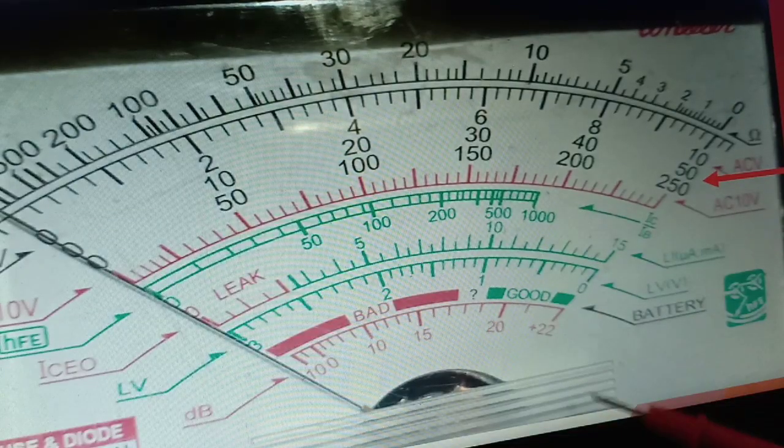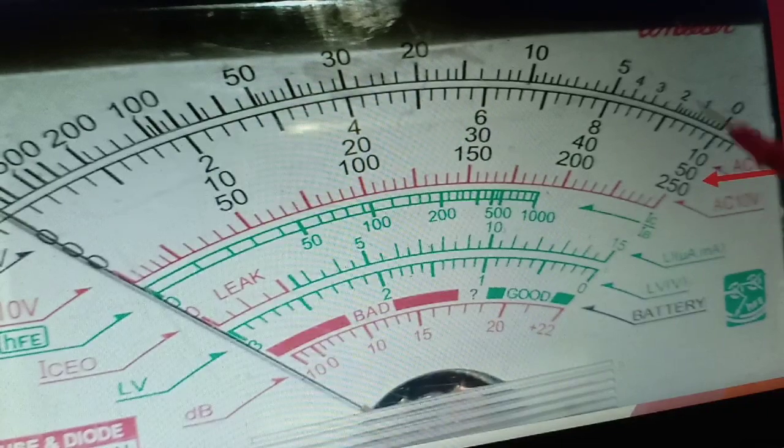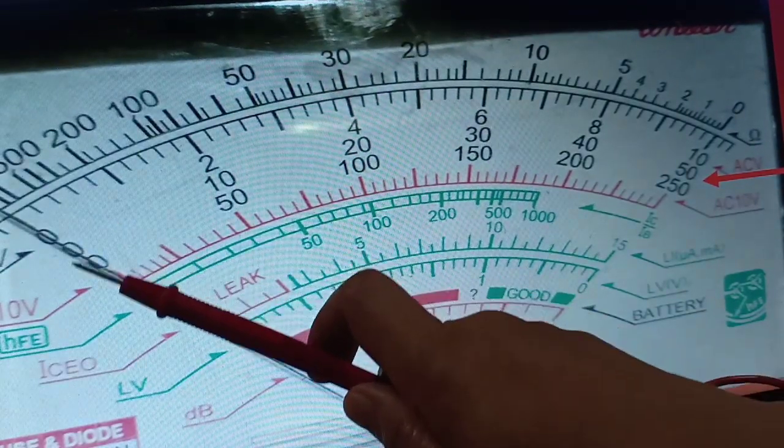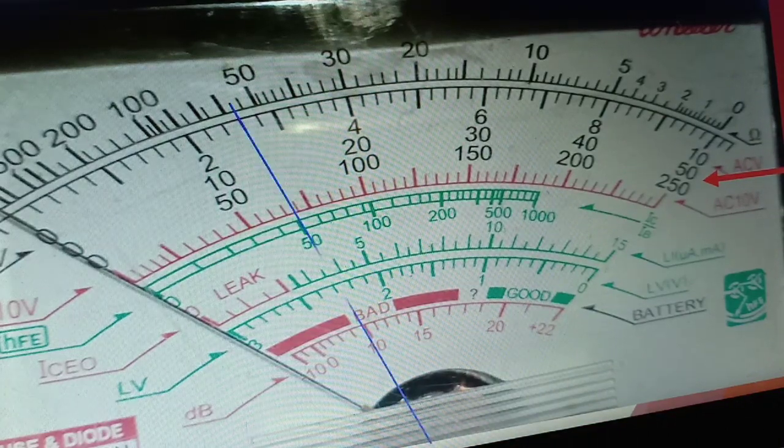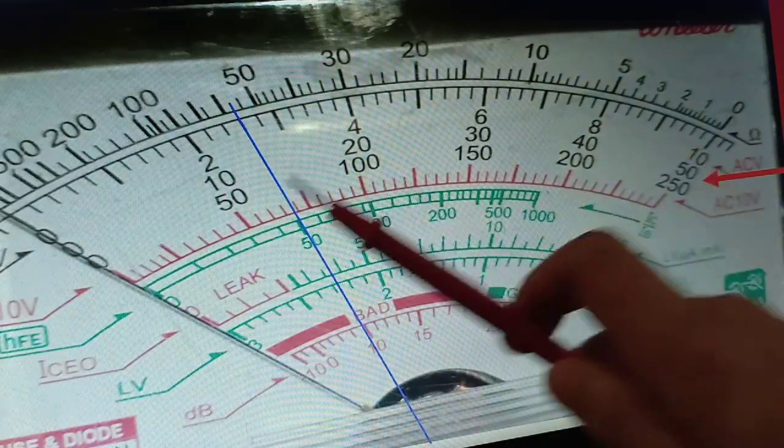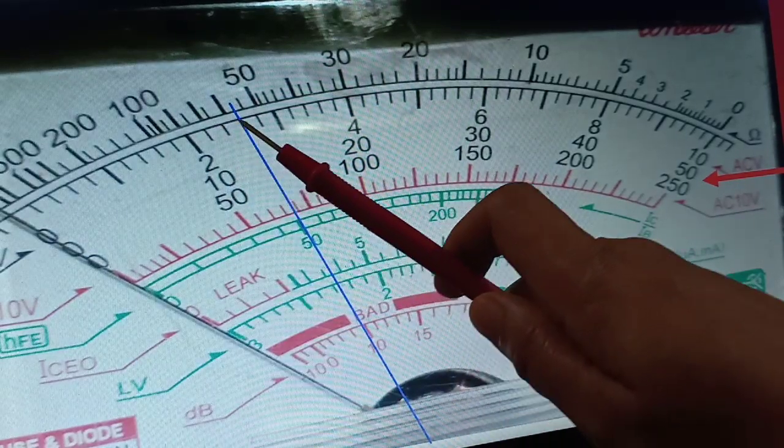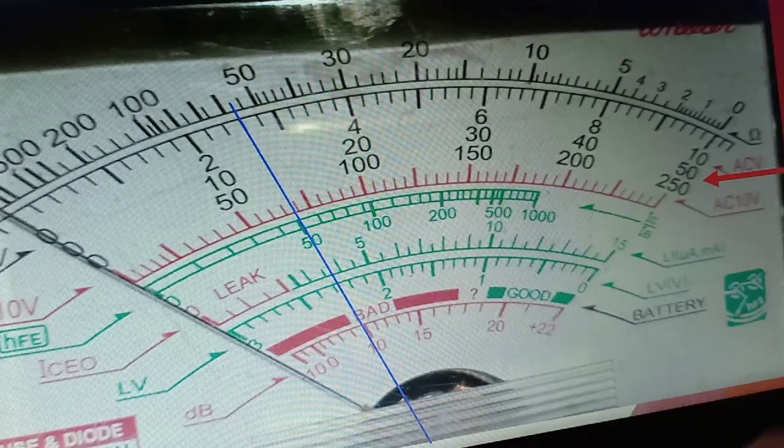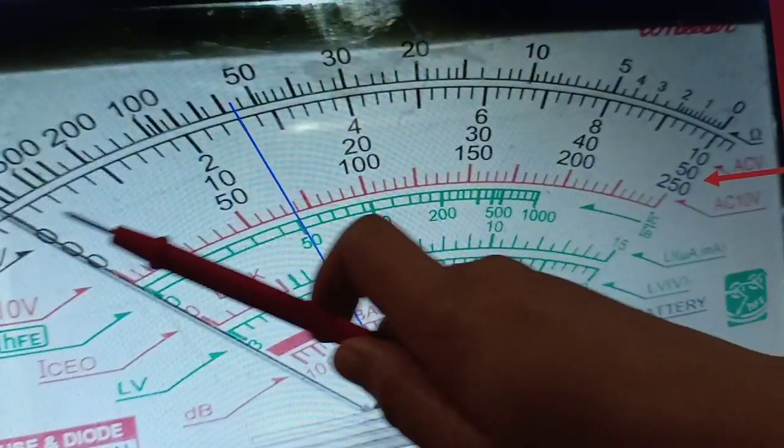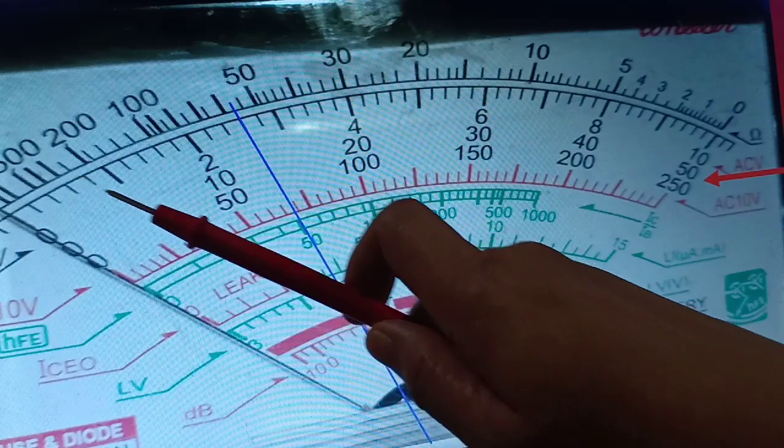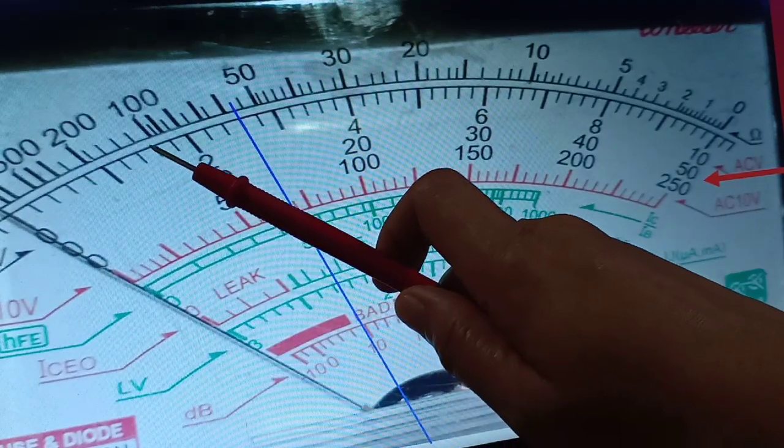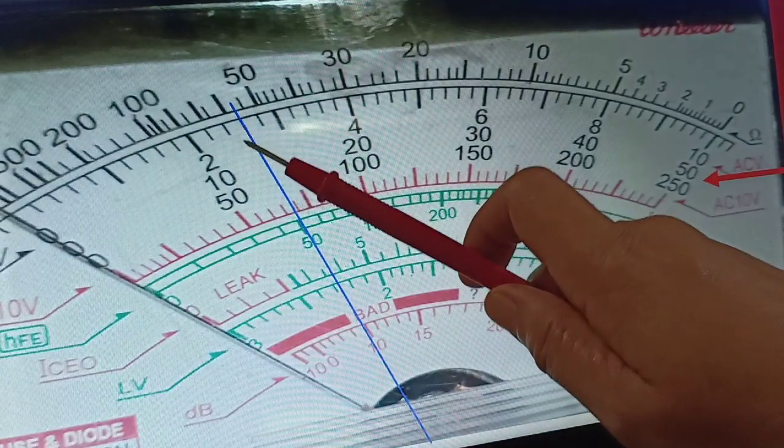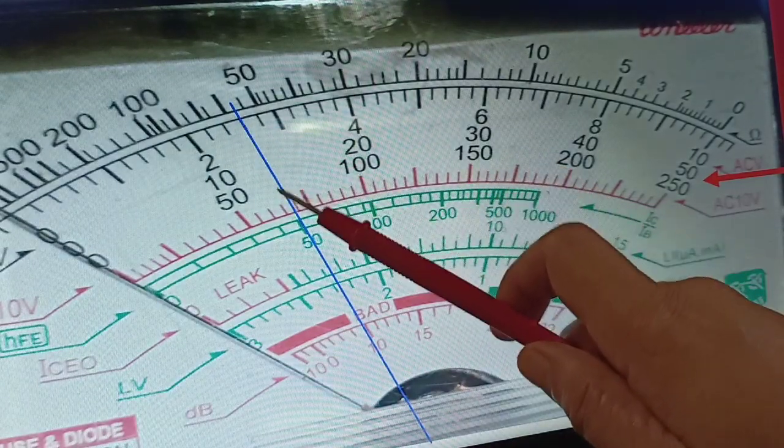It is easier to count if the setting is 50 because each line is equivalent to 1. Therefore, if it is equivalent to 1, we can now read this as 10, 11, 12, 13. 13 volts. I hope you get it. In here, the reading is 13 volts.